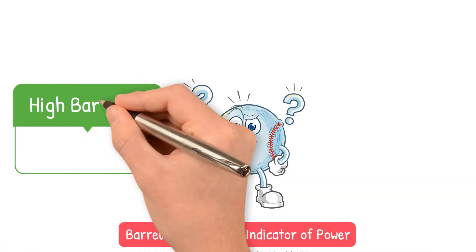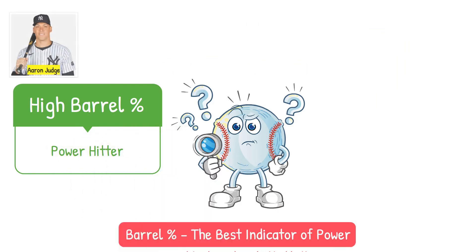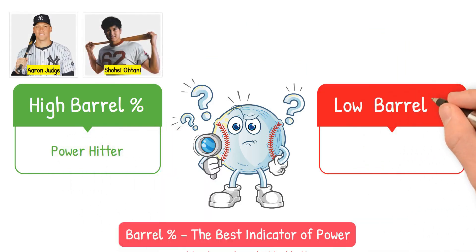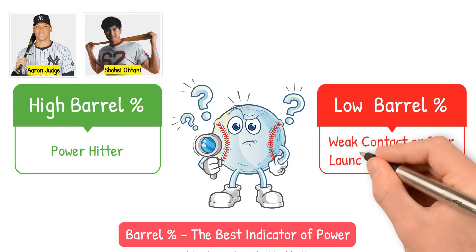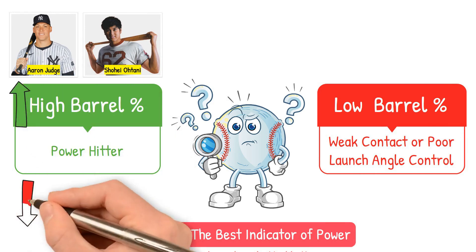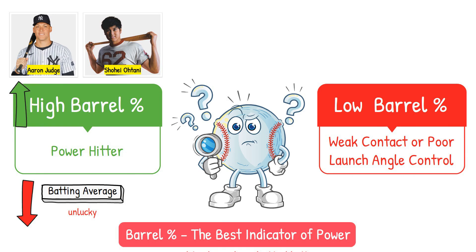Why does this matter? A high barrel percentage is going to describe your power hitters — think Aaron Judge and Shohei Ohtani. A low barrel percentage will equal weak contact or poor launch angle control, so ground ball heavy hitters. If a player has a high barrel percentage but a low batting average, they may just be unlucky, so you should check their expected stats to see how they should be performing.